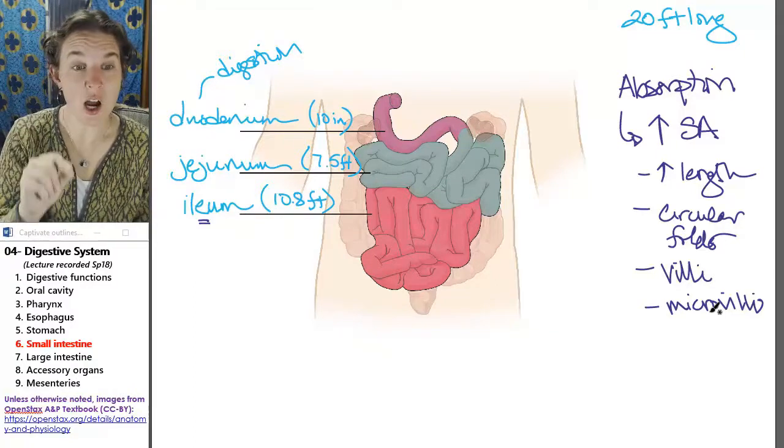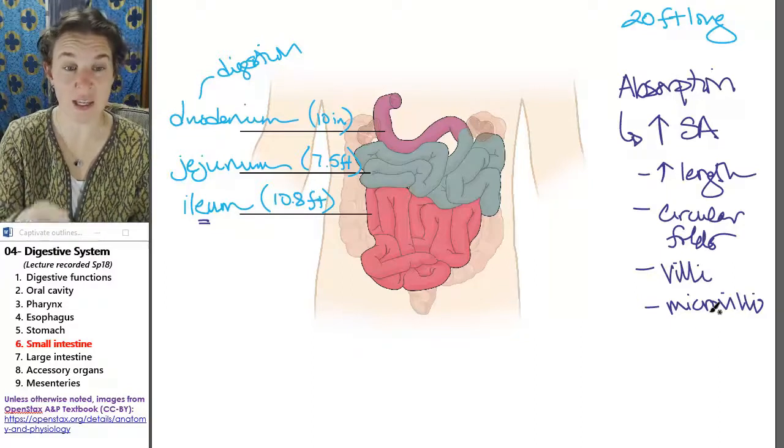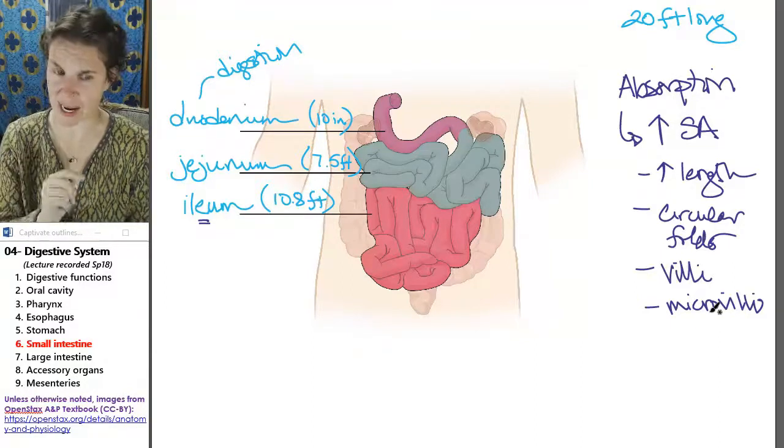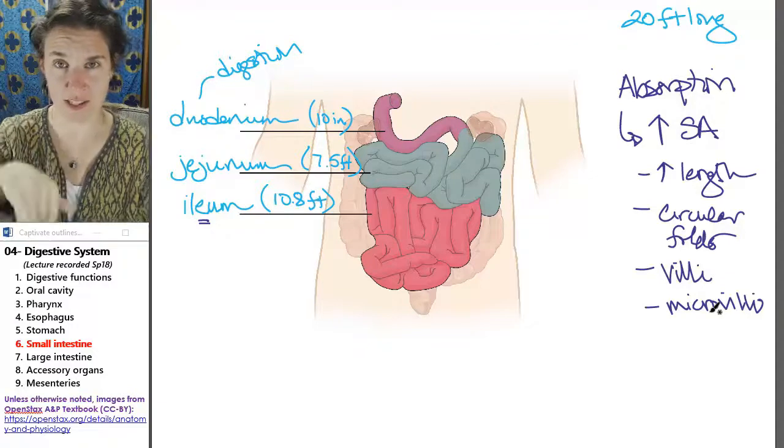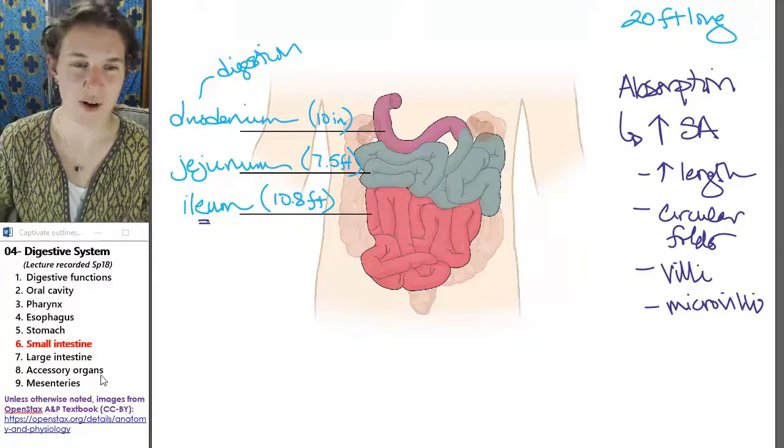We're going to talk about the accessory organs that actually secrete stuff into the duodenum in, like, a time and a half or whatever the next lecture.